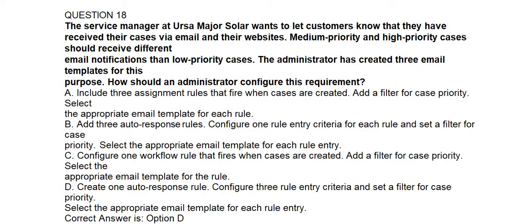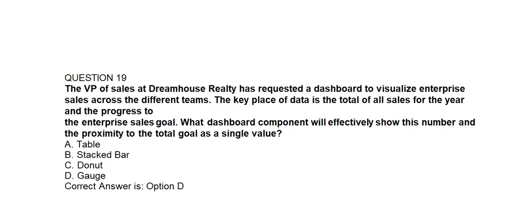Question number nineteen. The VP of Sales at DreamHouse Realty has requested a dashboard to visualize enterprise sales across different teams. The key piece of data is the total of all sales for the year and progress to the enterprise sales goal. What dashboard component will effectively show this number and the proximity to the total goal as a single value? Option A: Table. Option B: Stacked Bar. Option C: Donut. Option D: Gauge. Correct answer is Option D: Gauge.